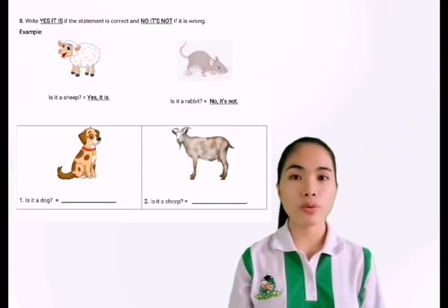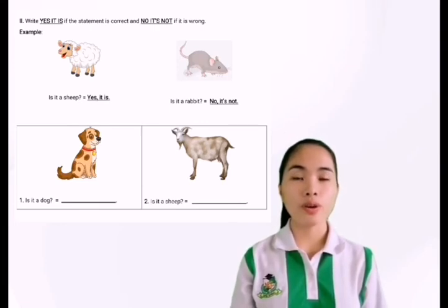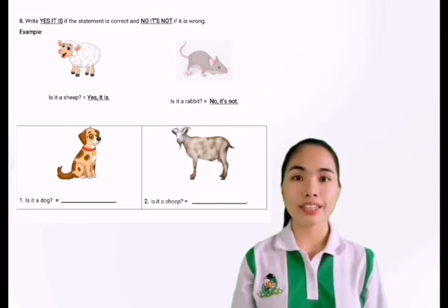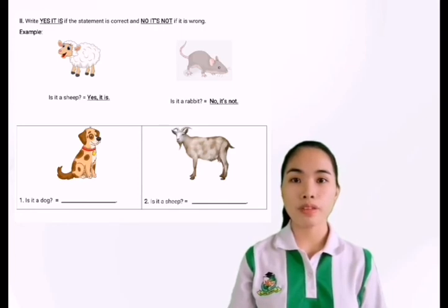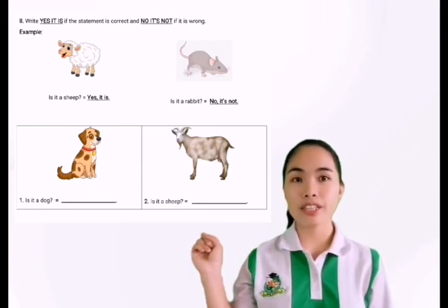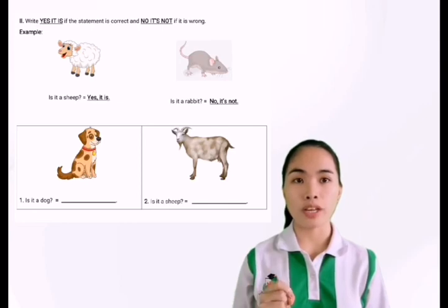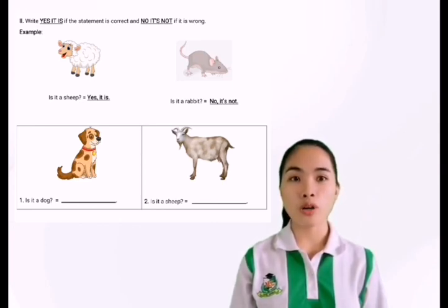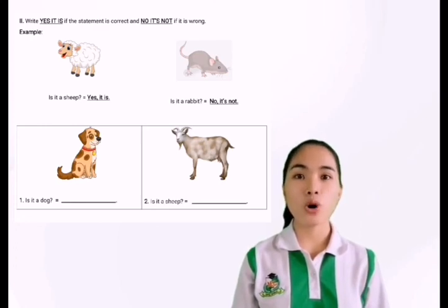The second page of your worksheet is: you are going to write 'yes it is' if the statement is correct, and 'no it's not' if the statement is wrong. For example, number one — is it a sheep? You need to look at the picture first before you answer. If the statement is correct, write 'yes it is.' If the picture is wrong, write 'no it's not.'